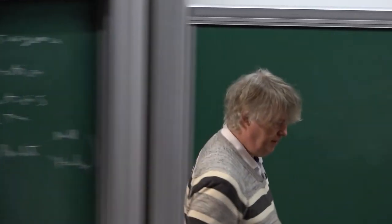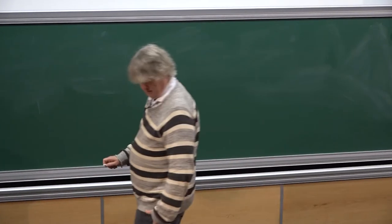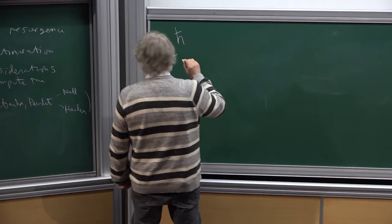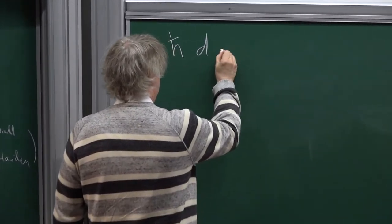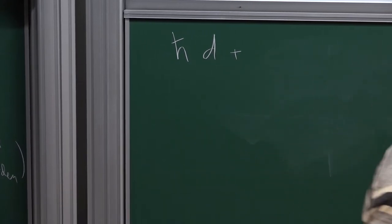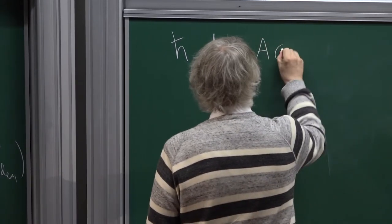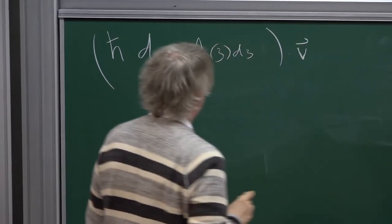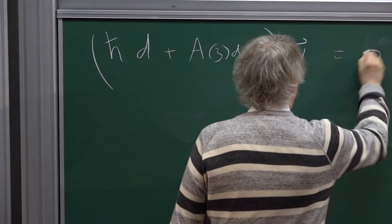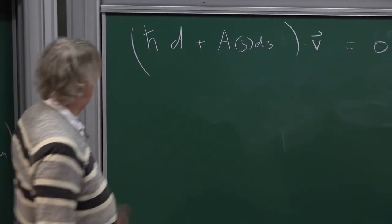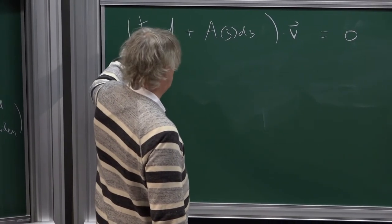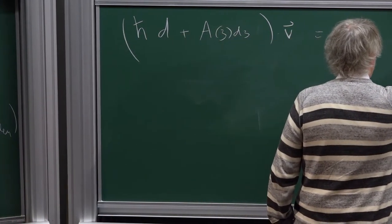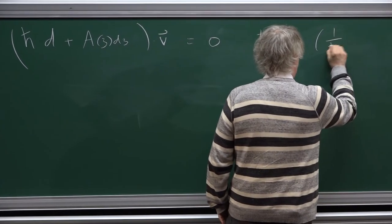The basic setup: we have an equation of the form h-bar d plus A of z times a vector equals zero. This is our basic ODE, singular in the variable h-bar as h-bar goes to zero. We really think of this as a variable one over h-bar going to infinity.